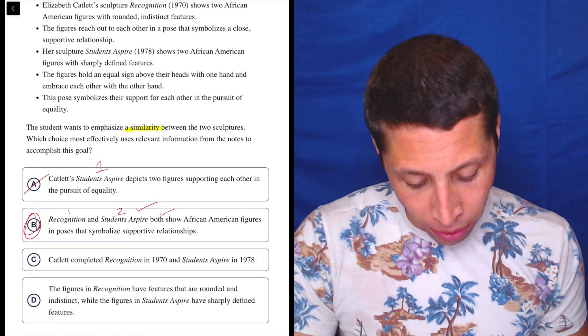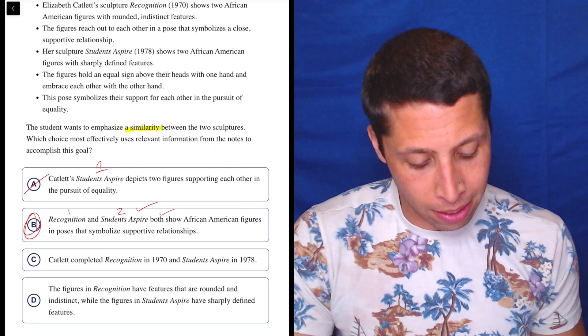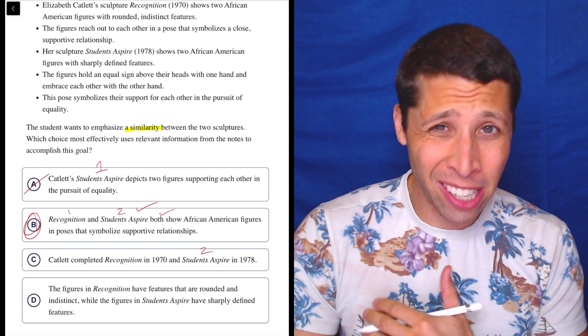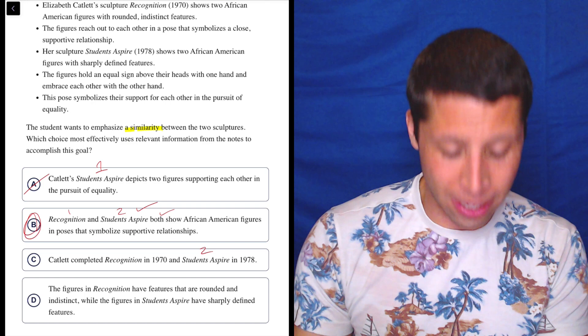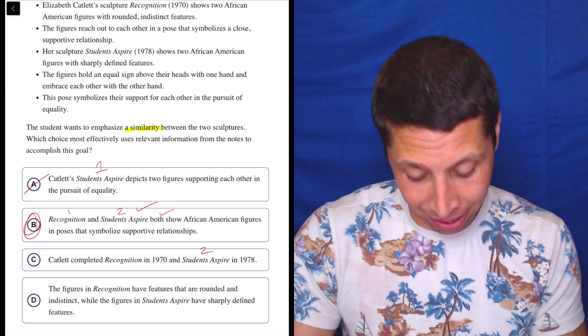C: Catlett completed Recognition in 1970 and Students Aspire in 1978. So there's two, but is this a similarity? It sounds like a difference, right? One was completed in 1970, one was completed in 1978. Those are different years, so that's not a similarity, that's a difference.